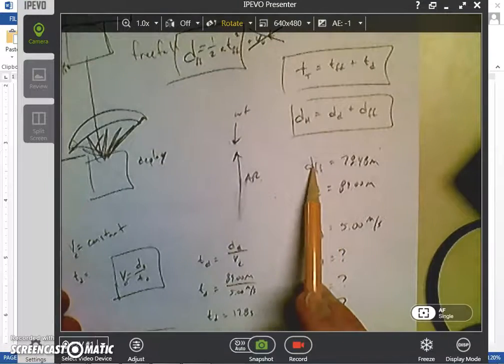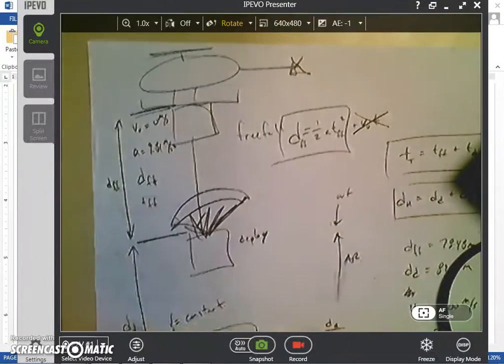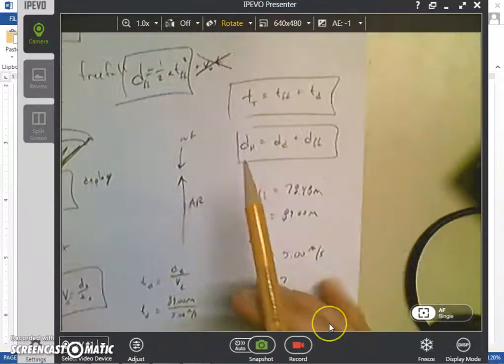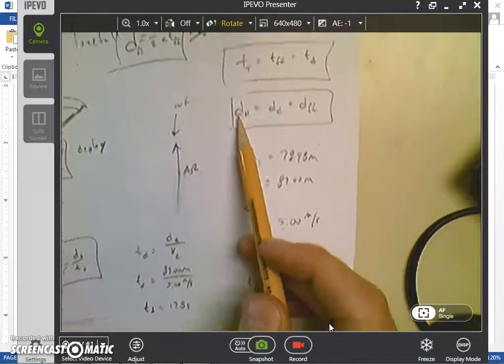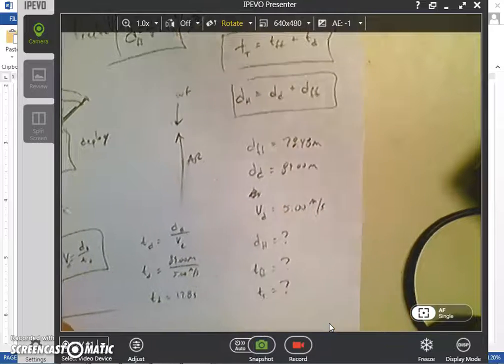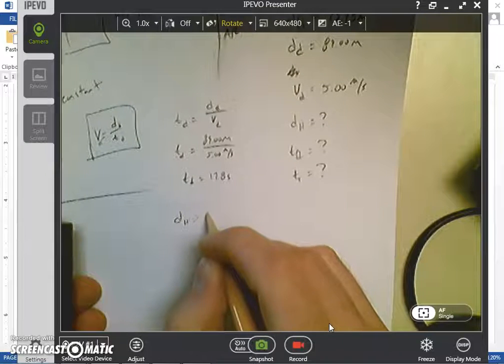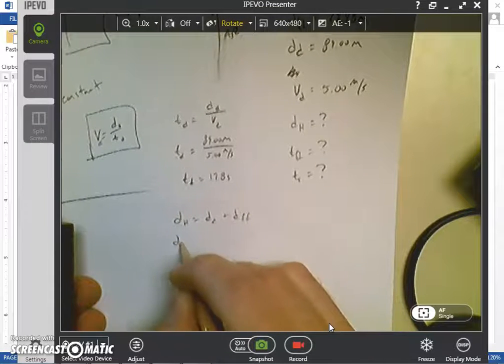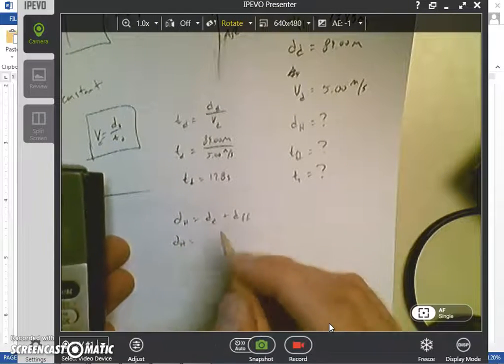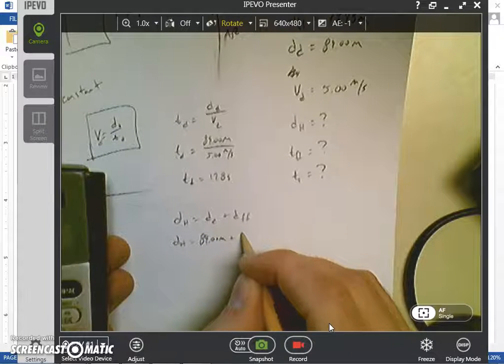If we know the distance of freefall and the distance of deployment, we know this and this, so therefore we know the helicopter height, which is D_H. So we're going to plug this in, so helicopter height, D_H equals D_D plus D_FF. D_D is 89.00 meters plus 78.48 meters.